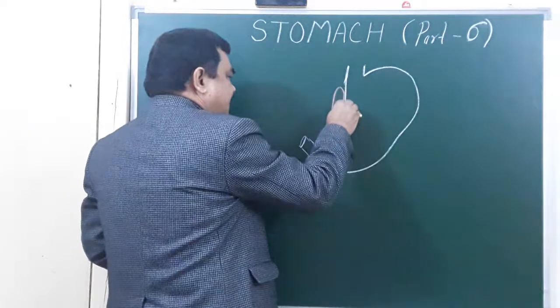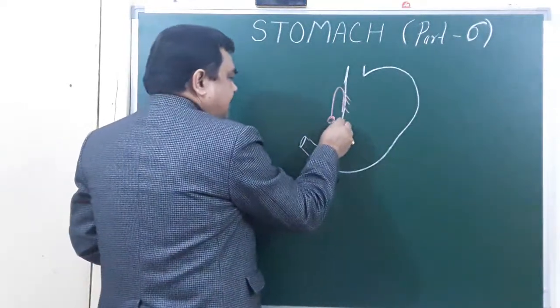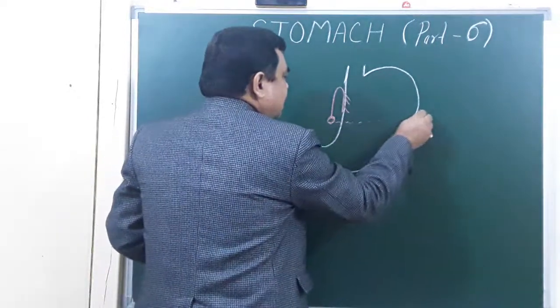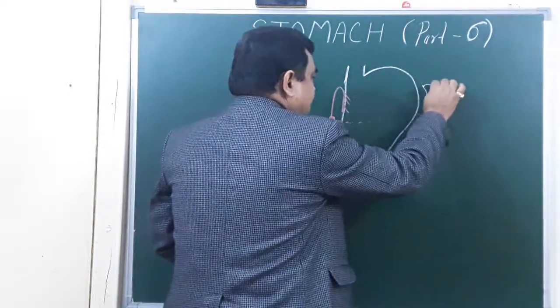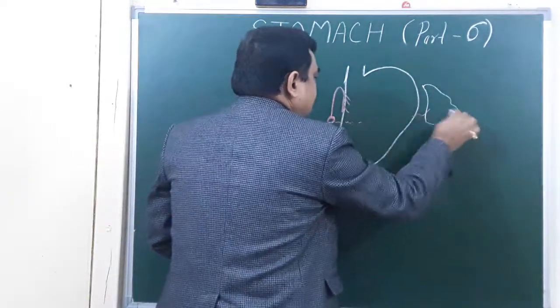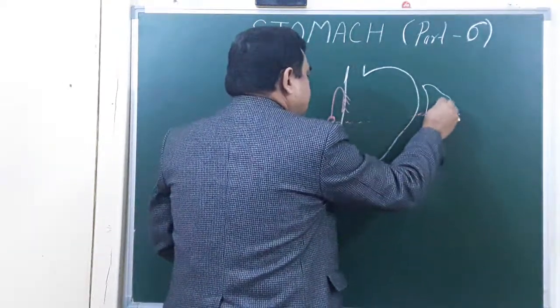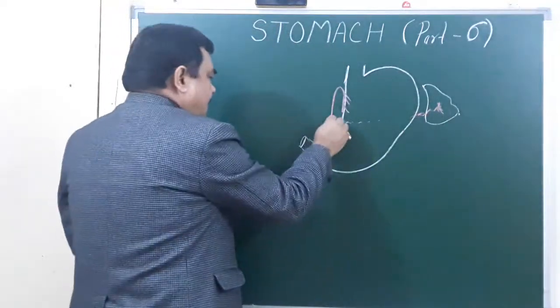One branch is the left gastric artery. This is the left gastric artery. And there is the splenic artery. Here is the position of the spleen. This is the splenic artery. Its course is tortuous. And another artery is the common hepatic.